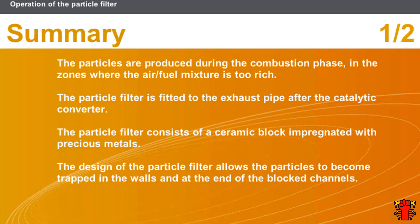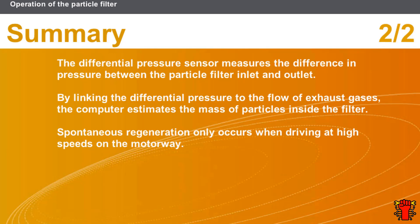In this section, we covered the following points: the particles are produced during the combustion phase in zones where the air-fuel mixture is too rich. The particle filter is fitted to the exhaust pipe after the catalytic converter and consists of a ceramic block impregnated with precious metals. Its design allows particles to become trapped in the walls and at the end of the blocked channels. The differential pressure sensor measures the pressure difference between the filter inlet and outlet, and by linking this to exhaust gas flow, the computer estimates the mass of particles. Spontaneous regeneration only occurs at high motorway speeds.